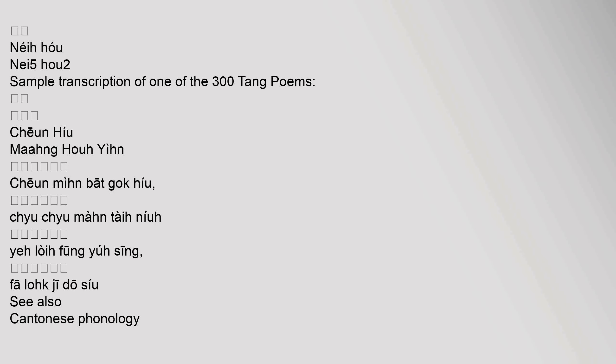Examples are provided in traditional and simplified characters with romanization using both tone marks and tone numbers. For instance, Guangzhou wa (Guang2 Jau1 wa2) and yut (yut6).